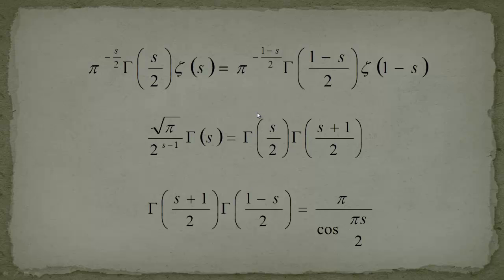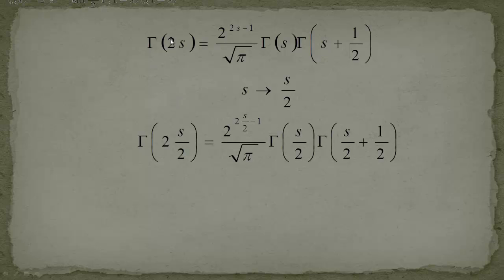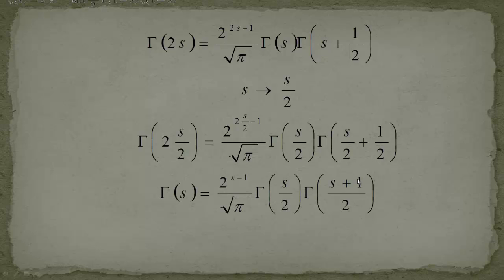We start with the Legendre duplication formula — nothing special about it. We replace s by s/2. We have 2 multiplied by s/2, so the 2 cancels; and we get 2 to the 2·(s/2), so that 2 also cancels, giving us 2 to the s minus 1. We also get square root of pi, and the gamma terms combine as gamma of s/2 plus s/2, which is gamma of s.